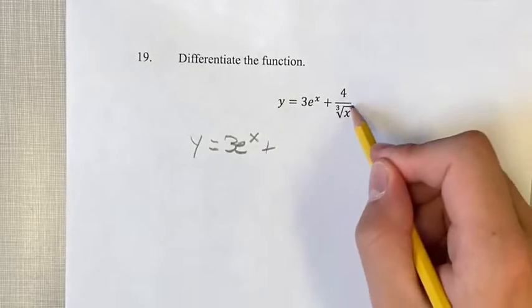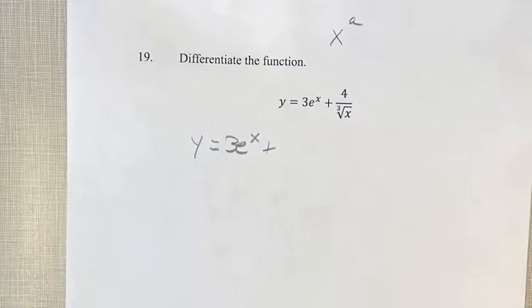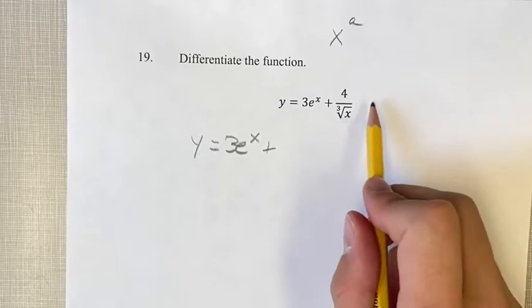So we need to do two steps. We need to turn this into the form x^a, where a is some power, and then we have to bring it into the numerator.